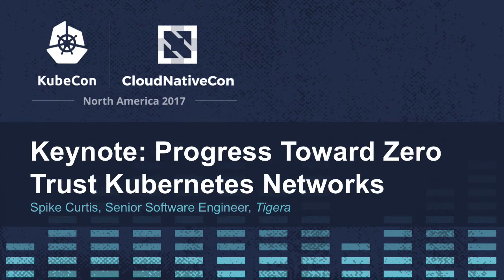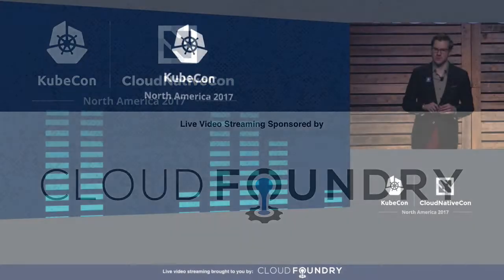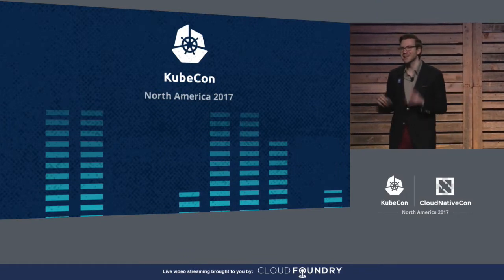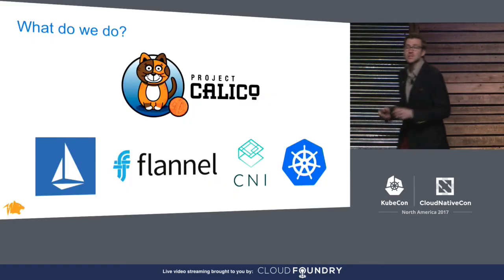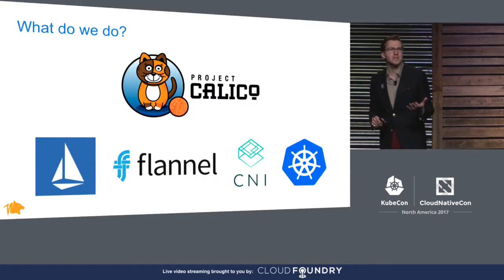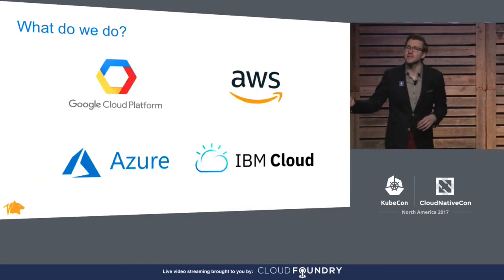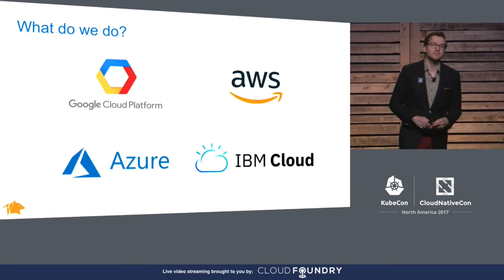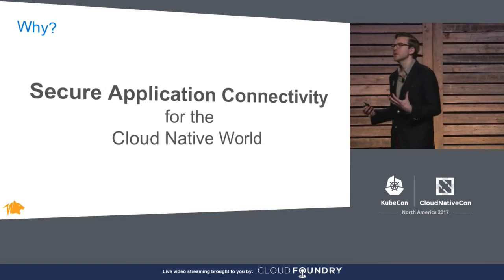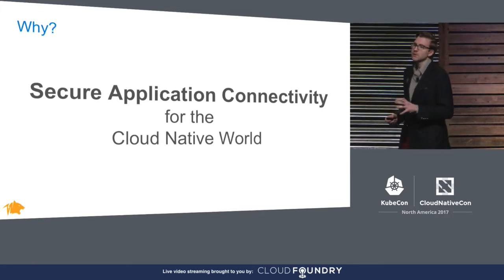Morning. It's great to be here. My name is Spike Curtis, and I am a software engineer at Tigera. Tigera is a contributor to Istio and to Kubernetes. We're maintainers of Flannel and the CNI. And our flagship is Project Calico. All your favorite hosted Kubernetes services have chosen Project Calico as the implementation for network policy. We build these technologies because our mission is to provide secure application connectivity for the cloud-native world.